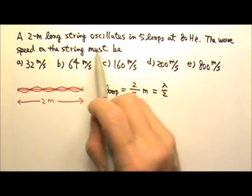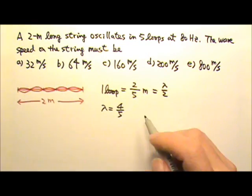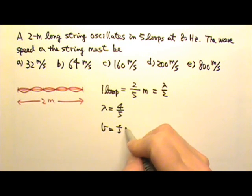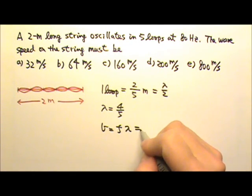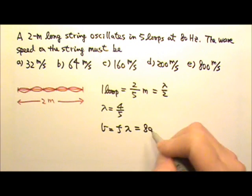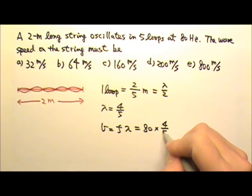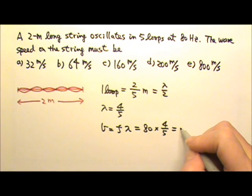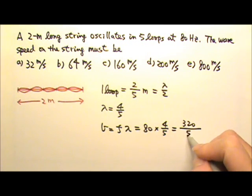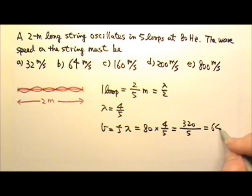And what I want is the speed of the wave. Speed is frequency times lambda. And the frequency is 80, and we just found the wavelength to be four-fifths. So, this gives us 320 divided by five, which is 64 meters per second.